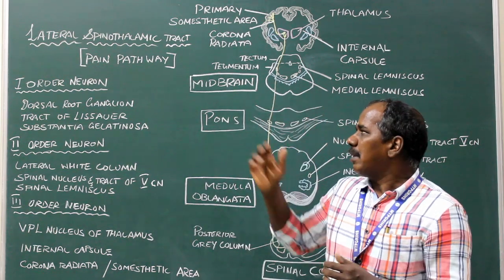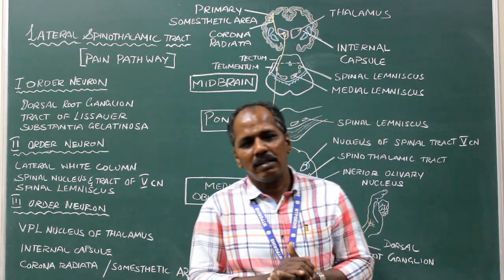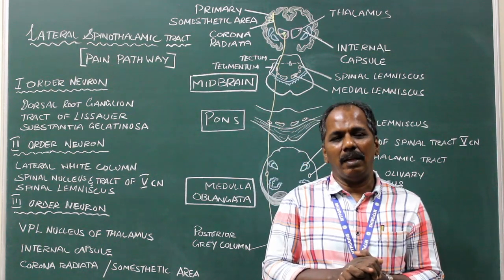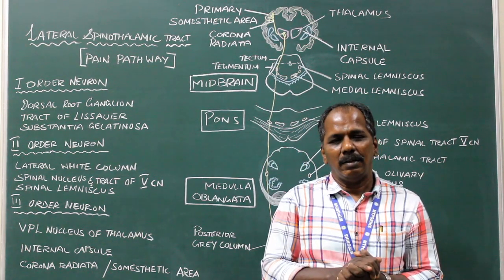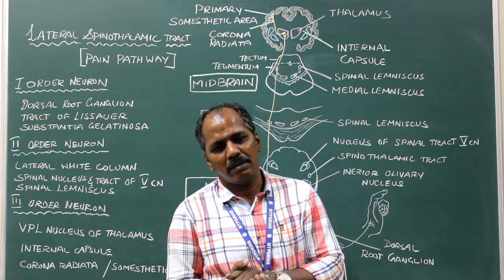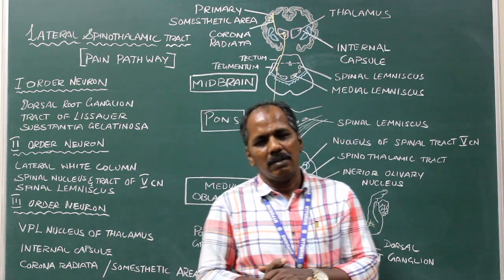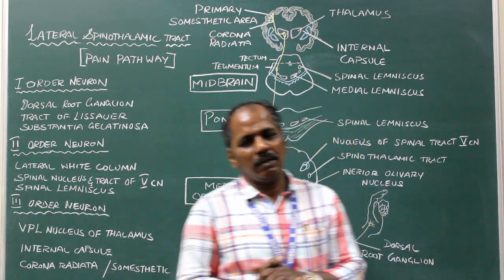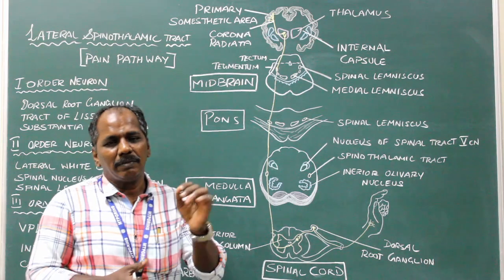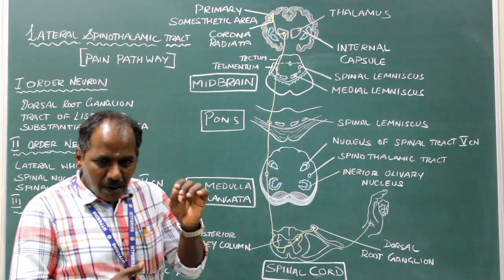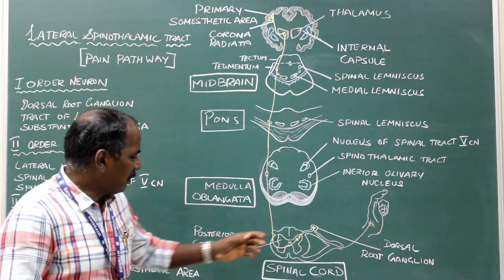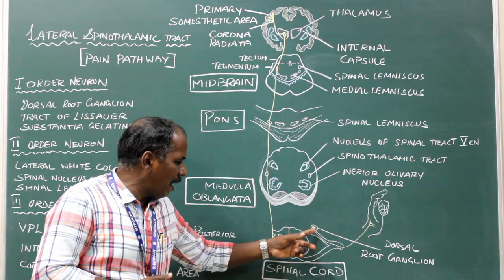Lateral spinothalamic tract, or pain and temperature pathway. It has three orders of neurons. First order neuron: the cell bodies of the first order sensory neurons are present in the dorsal root ganglion.